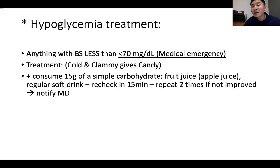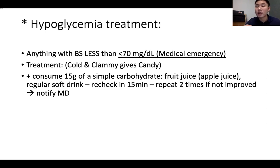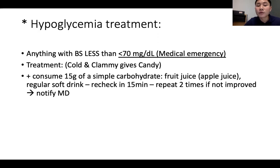Hypoglycemia treatment: anything below 70 mg/dL is a medical emergency. Remember 'cold and clammy, give candy.' Recheck the blood sugar once to confirm; if still below 70, apply the 15 rule — give 15 grams of simple carbohydrate such as fruit juice or regular soft drink, recheck in 15 minutes. If still below 70, repeat up to two more times. If not improved after three attempts, notify the doctor.